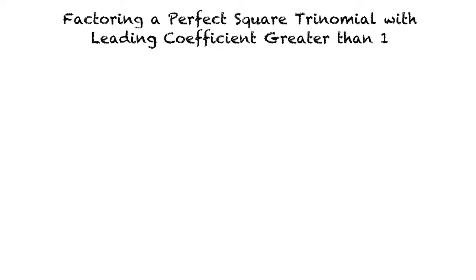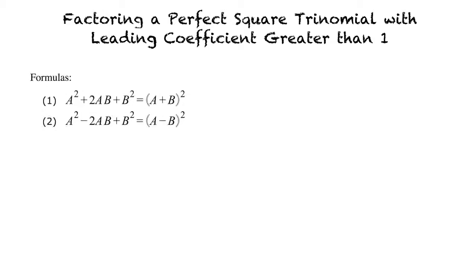This video will cover the topic: Factoring a Perfect Square Trinomial with Leading Coefficient Greater Than 1. Let's begin by taking a look at two main formulas. The first formula deals with a factor that has addition, and the second formula deals with a factor that has subtraction.